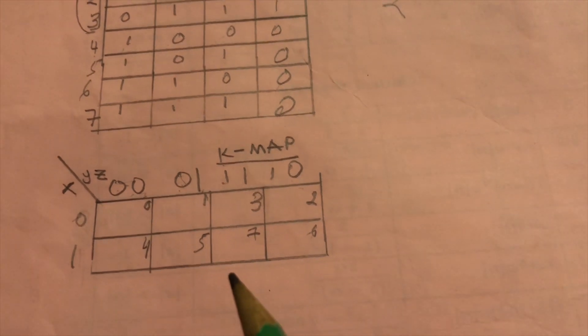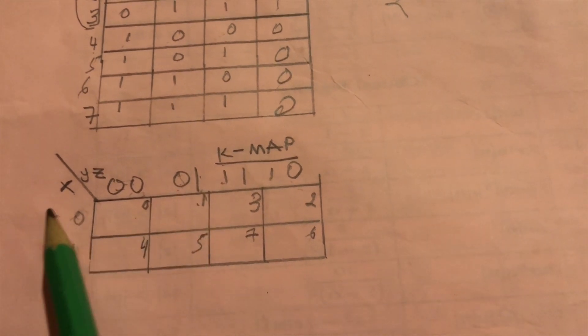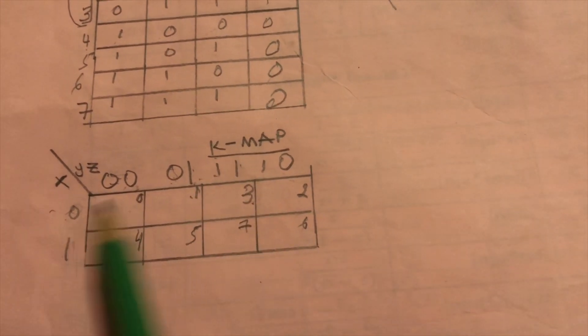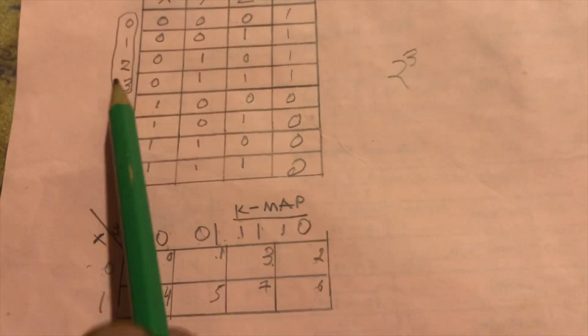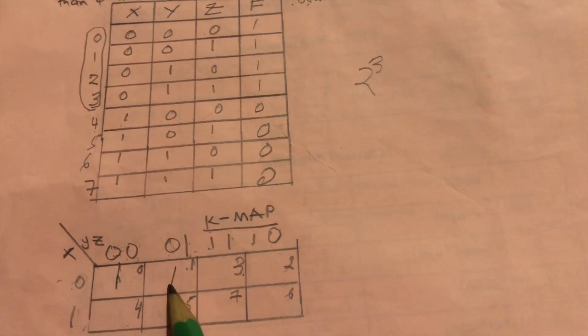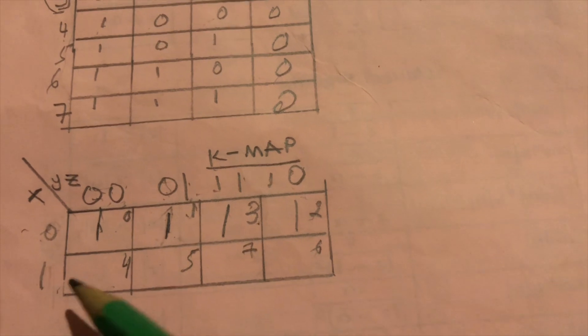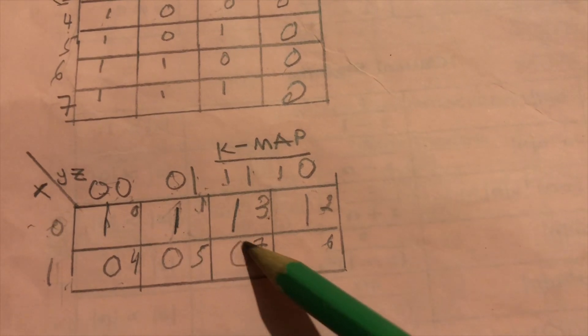The numbering works because 0,0,0 is 0; 0,0,1 is 1; 0,1,1 is 3; 0,1,0 is 2; 1,0,0 is 4 — the same way we did on the truth table. Now we fill in the output values. For positions 0, 1, 3, and 2 the output was 1, and for positions 4, 5, 6, and 7 the outputs were all 0.